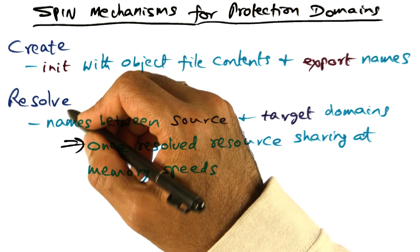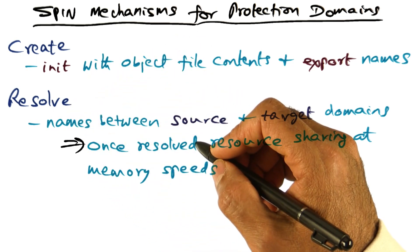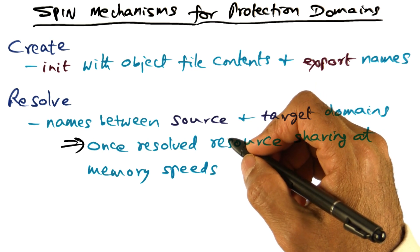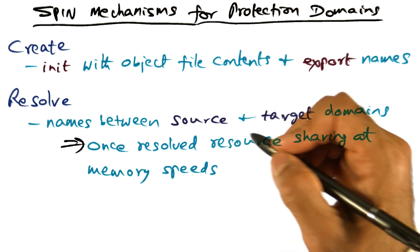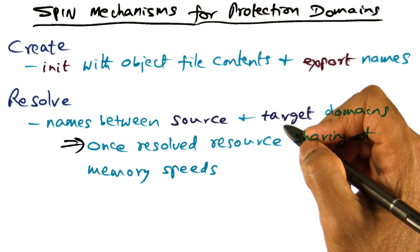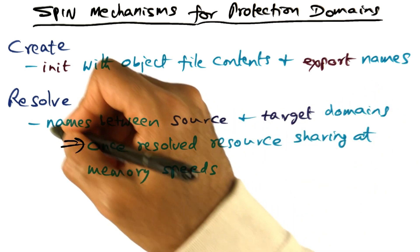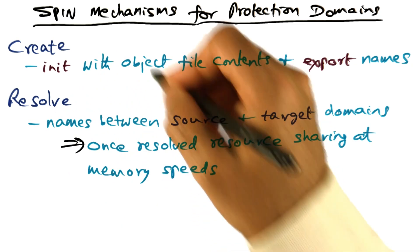The second mechanism in SPIN is resolving names. If one protection domain wants to use the names that are in another protection domain, it can accomplish that by using the resolve primitive available in SPIN.